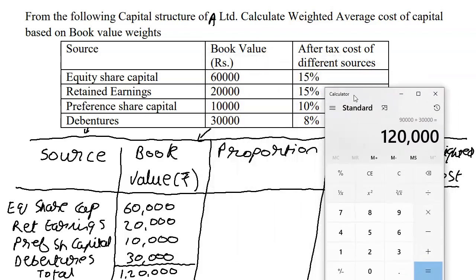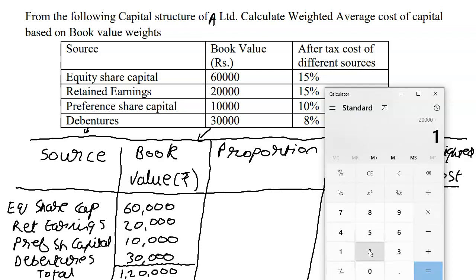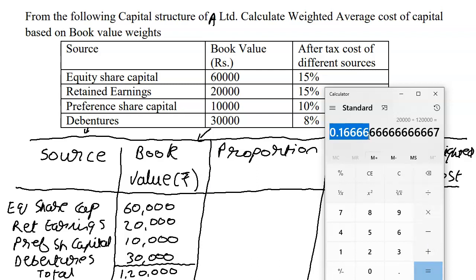Now if we want to calculate proportion, it's going to be all of these individual numbers — 60, 20, 10, 30 — all divided by 120,000. Don't bother multiplying into 100; even if you get it in decimal, it is more than enough. When you do 60,000 upon 120,000, you get 0.5. If you do 20,000 upon 120,000, you get a non-terminating decimal, so we take it up to 4 decimal places: 0.1667.